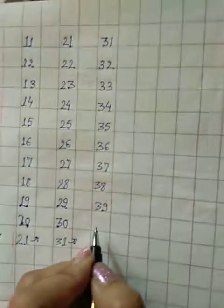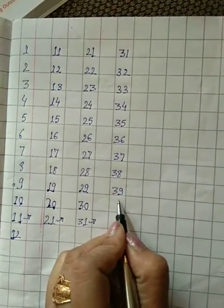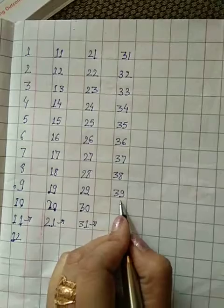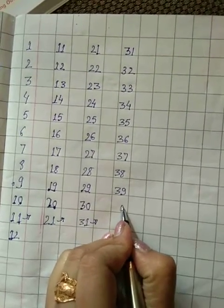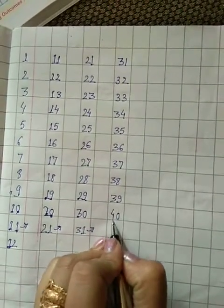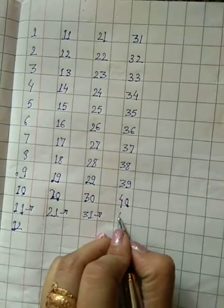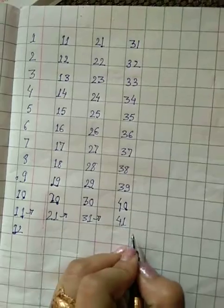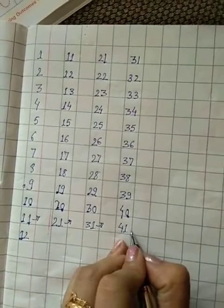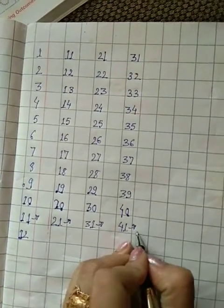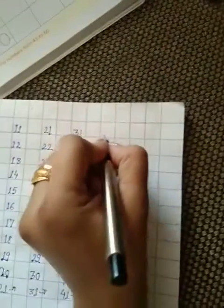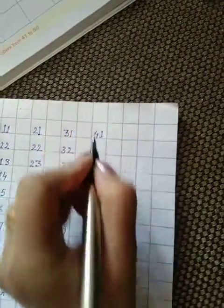Phir se 9 aagaya. Ab kya karenge? 9 ke baad 0. Aur 3 ke baad 4. Yeh hua 4, 0, 40. 40 ke baad aayega 4, 1, 41. Jaise ki yahaan par sab jagah aa raha tha, hum phir se isko upar ki taraf leke jayenge. Yeh aaya hamara 4, 1, 41.